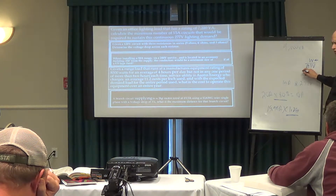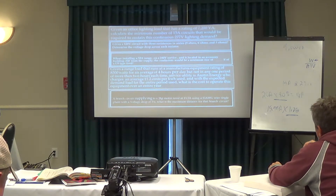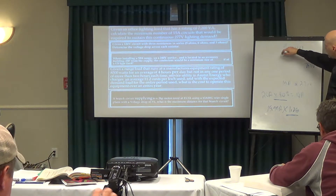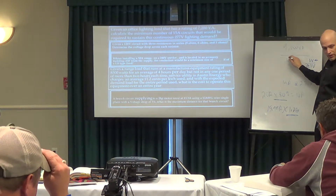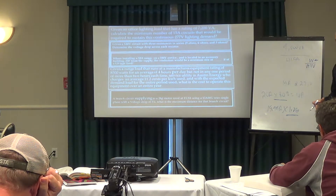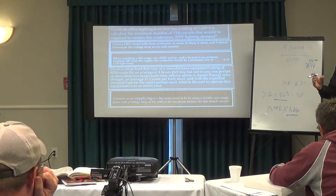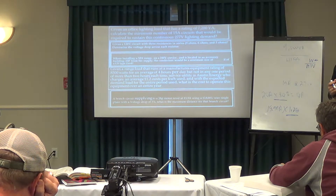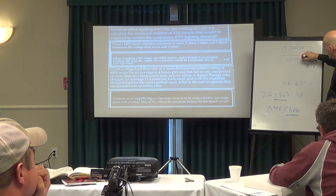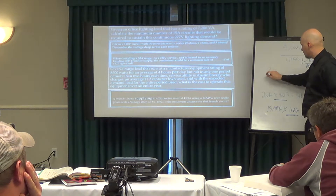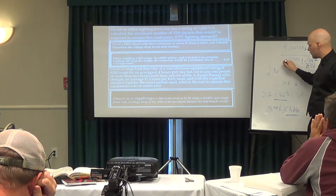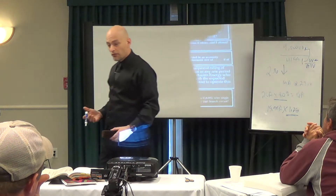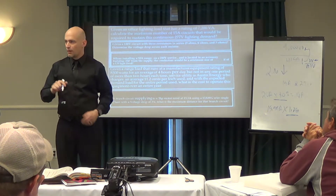15 amps times 277 volts is 4,155 VA. Think of that as a container that will hold 4,155 VA and not one more. How many of those containers do I need? Dividing 9,000 by 4,155 gives you 2.16. It's a habit to round down anything below .5, but you cannot do that as a general rule on an exam — they're specifically testing for that mistake. Don't make rounding down a habit.